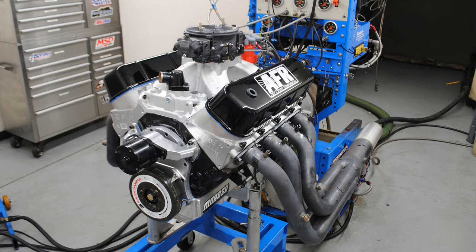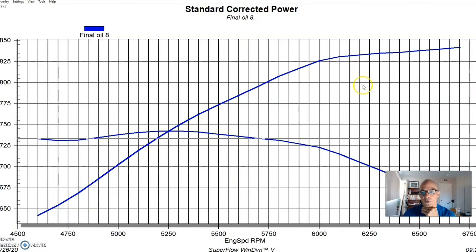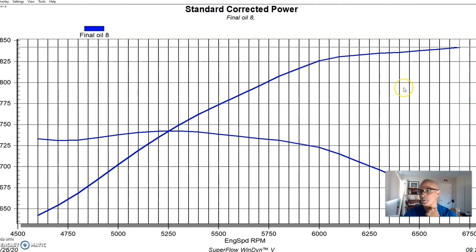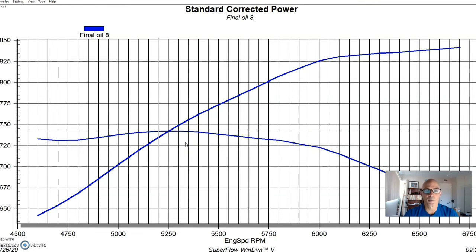So this was our combination on the big block equipped with the Airflow Research 345 as-cast heads. Our 572 stroker produced 842 horsepower, although power was still climbing and not dramatically, had we continued to rev this thing out closer to 7,000 RPM. But I ran it to 6,600, but it was still climbing a little bit. So there's probably another few horsepower in this thing. 842 horsepower and peak torque checked in at 743 foot pounds of torque. You can see it had a good curve, and 800 plus horsepower is a good combination.